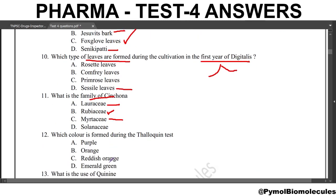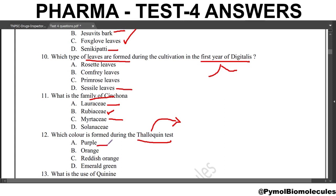Next question: which color is formed during the Thalleioquin test? The Thalleioquin test is specifically for Cinchona. The color formed will be purple.